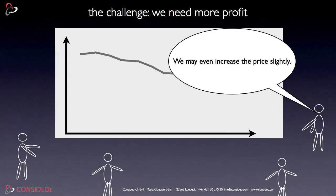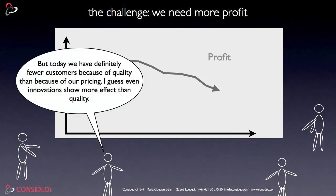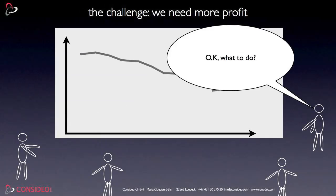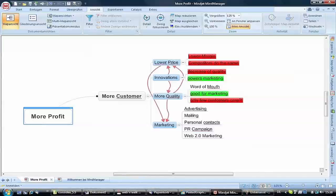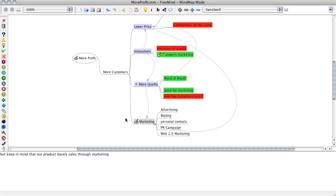So obviously there are three alternatives to choose from, and with all options they would also get some disadvantages. Putting the situation into a mind map is quite easy. Here is an image of a mind map using the leading software MindManager from MindChat. It simply shows the content that was said in the business conversation. Quite similar looks a mind map within the software FreeMind.